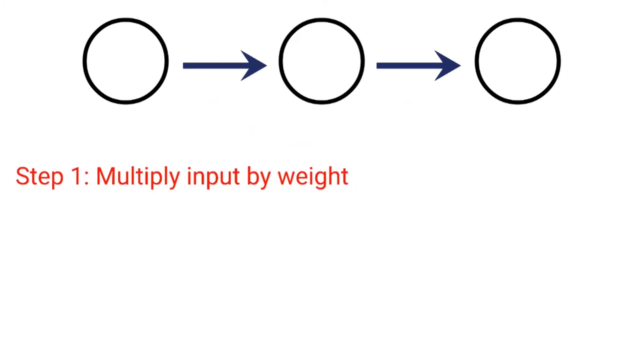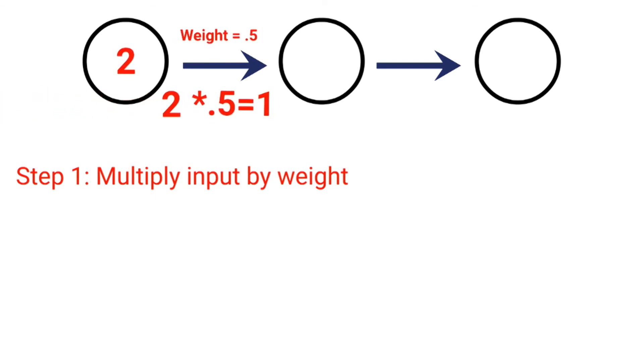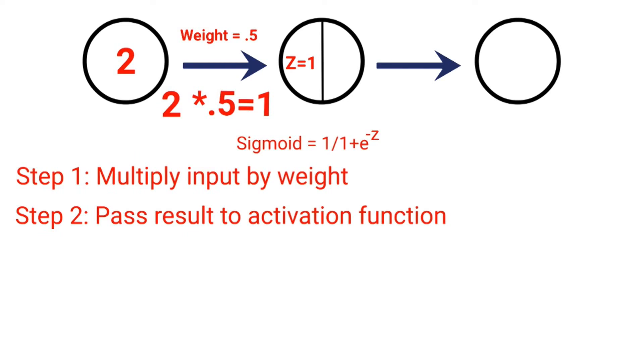To cap things off, let's take a look at another example where we employ a weight at each tensor as you would in a normal neural network. Step one, we multiply our input by our weight. Let's use two as an example and a weight of 0.5. Two times 0.5 gives us equals one. So z would be equal to one. Step two, we pass that result, or z, to our activation function. In this example, we'll stick with the sigmoid activation function. And the result of that function is 0.7. So the activation for our hidden neuron, or our middle node, is 0.7.